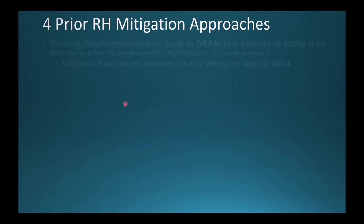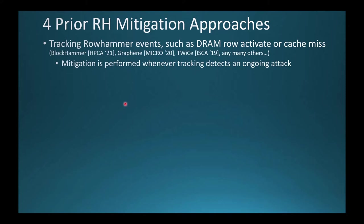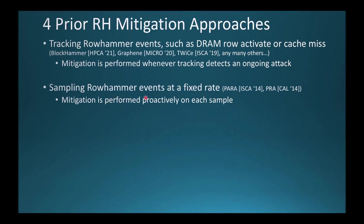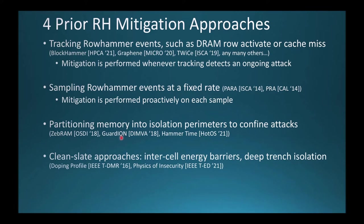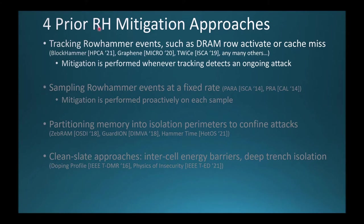Most previous approaches can be classified in four categories. First is tracking approaches, which track microarchitectural events associated with Rowhammer, such as a DRAM row activate or a cache miss, to detect an ongoing attack. Second is sampling approaches, which randomly sample the same microarchitectural event and proactively perform a Rowhammer mitigation on each sample. Third is partitioning approaches, which compartmentalize memory and isolate an adversary from potential victims. Fourth is clean slate approaches, which require significant changes to the memory hardware including DRAM fabrication technology and DIMMs. In this talk, because of time, I'm only going to focus on the tracking approach.